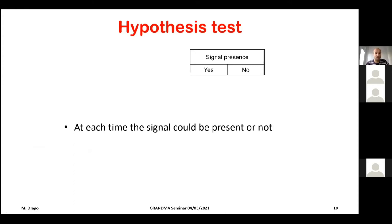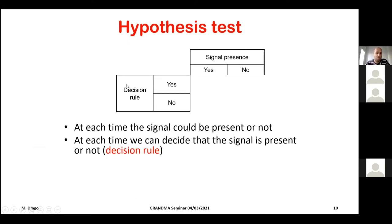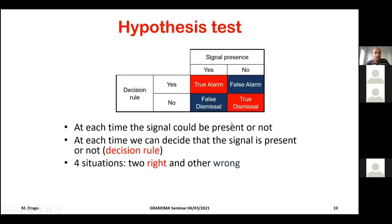Let's start with gravitational wave data analysis. When analyzing the data, in principle you apply what is called a hypothesis test: at each time, there could be a gravitational wave present or not. You apply a decision rule — an algorithm — that tells you whether you think the signal is there. You can be right or wrong: you can correctly identify a signal, miss a real signal, or detect something that isn't there. By combining these situations, there are two correct and two wrong outcomes, and you can tune the decision rule to change their rates.